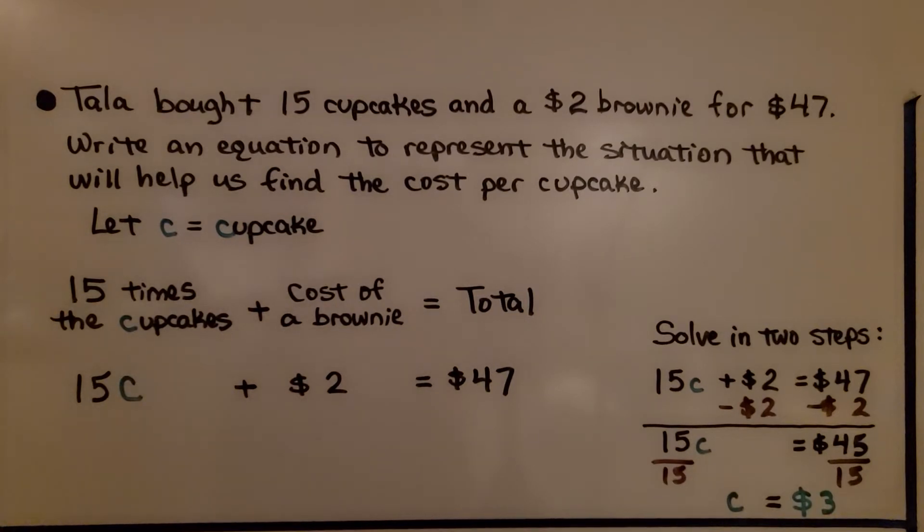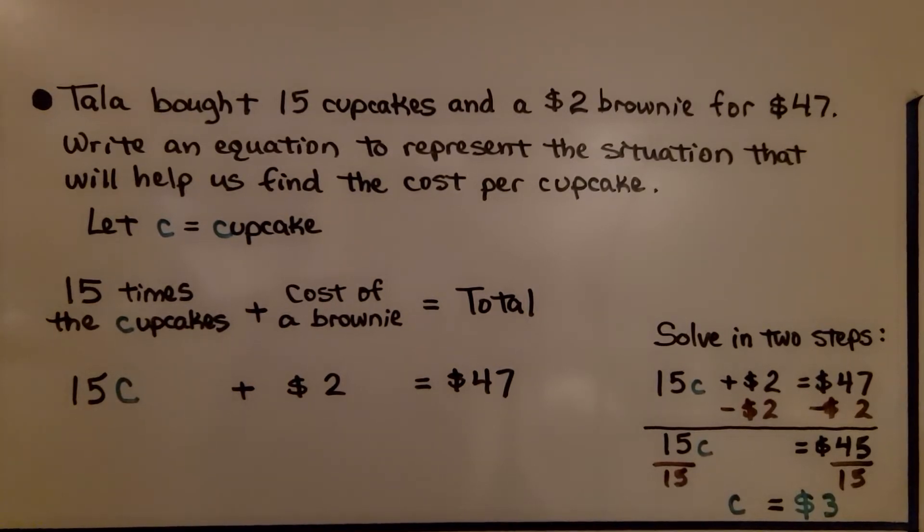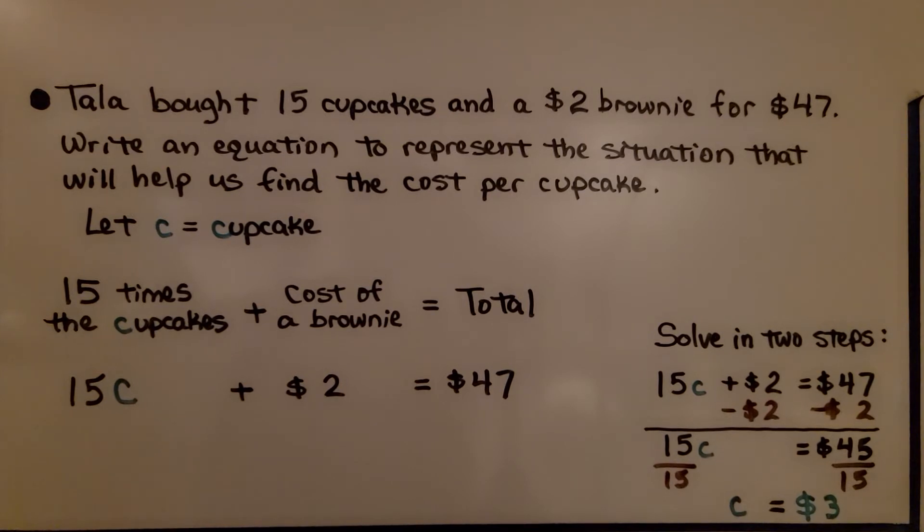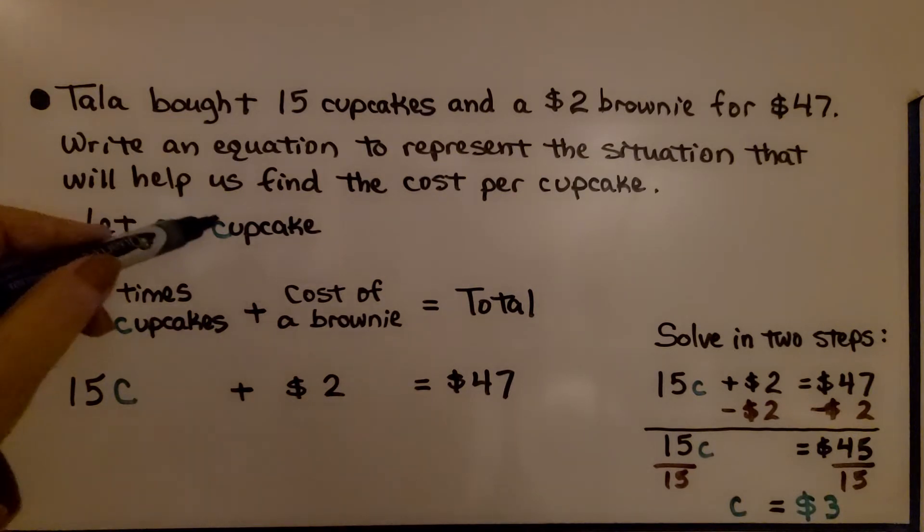Tala bought 15 cupcakes and a $2 brownie for $47. Write an equation to represent the situation that will help us find the cost per cupcake. So we're going to let C equal the cupcake and its cost.